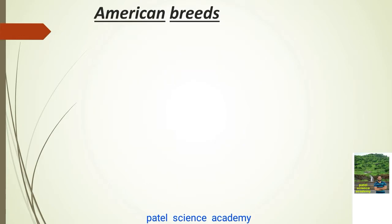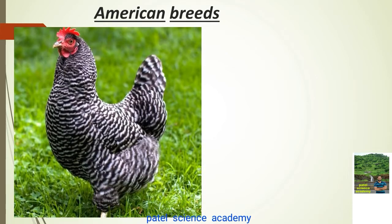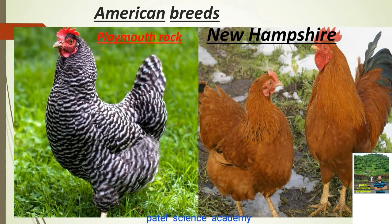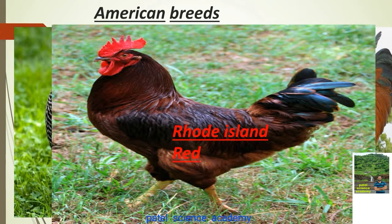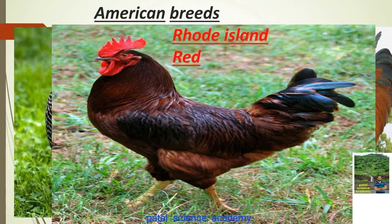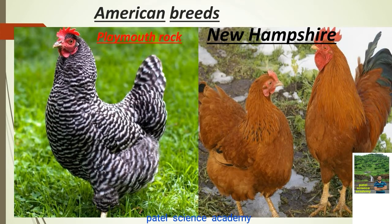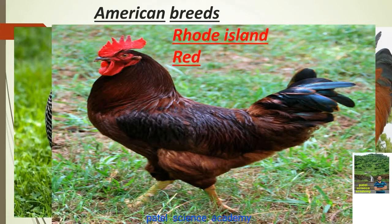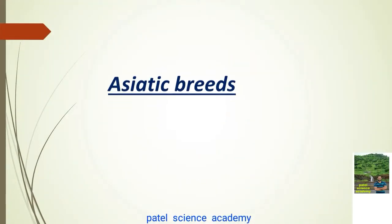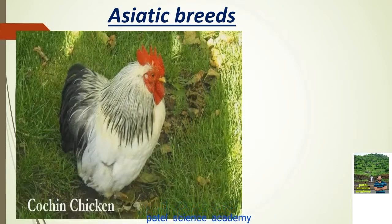Now let's look at American breeds. The first is Plymouth Rock — you can see it here. The second is New Hampshire — notice the color of the feathers. The third is Rhode Island Red, also from America. These three breeds — Plymouth Rock, New Hampshire, and Rhode Island Red — are used in poultry farm management.